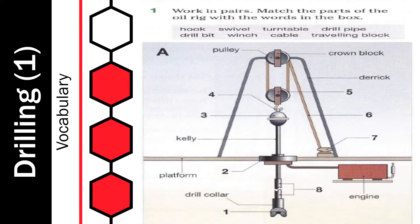Dear students, after we learned the most important words we need in today's lesson, please move to page 62 and do exercise number 1. In this exercise, match the parts of the oil rig with the words in the box. Have a look at picture A — we have numbers on the picture. Please think about the parts in the picture and try to give each number a name. The words you can use are in the box: Hook, Swivel, Turntable, Drill Pipe, Drill Bit, Winch, Cable, and Traveling Block. Think well, pause the video, then come back to check your answers.